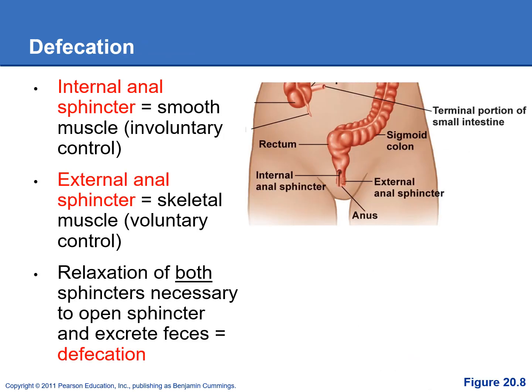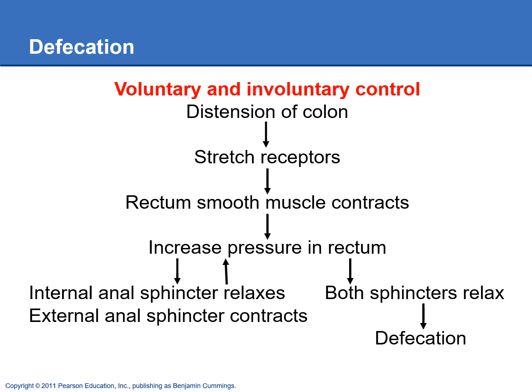For defecation, there is an internal and external anal sphincter. The internal anal sphincter is made of smooth muscle and is under involuntary control. The external anal sphincter is under voluntary control — your brain has to give the okay that this is an appropriate place to defecate, and then you can relax the external anal sphincter. You need to relax both sphincters in order to defecate. Sensory neurons inside the rectum sense the stretch from feces and tell your brain it's time to find a bathroom.